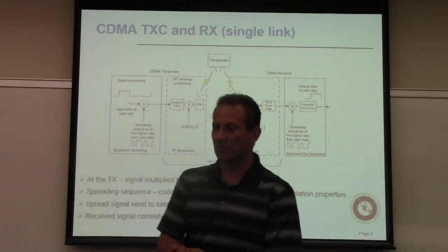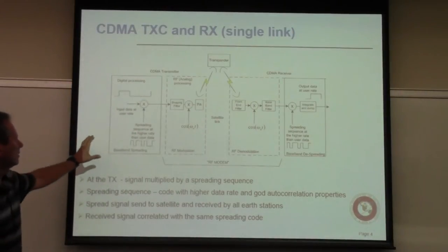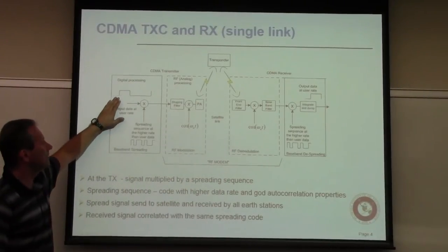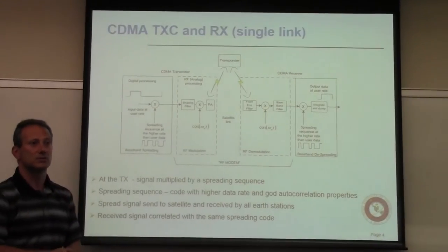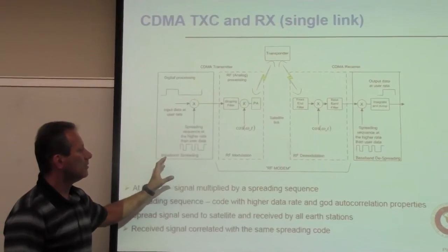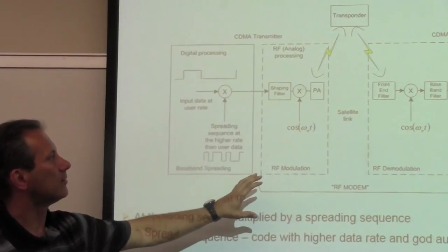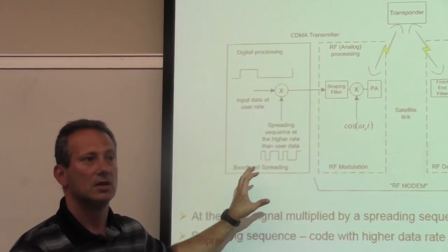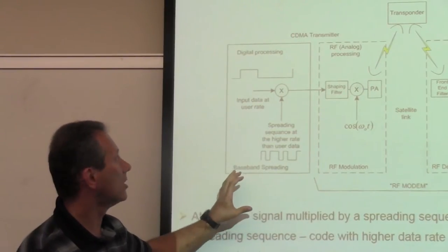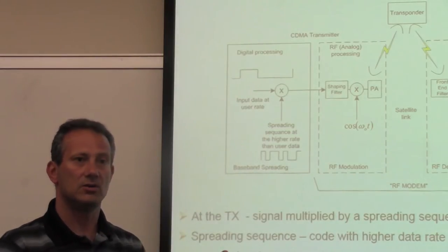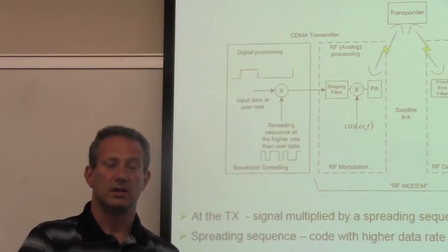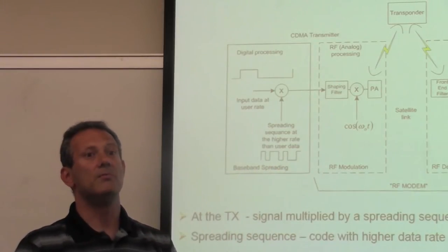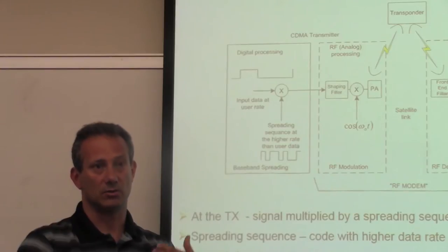This is looking at a transmission from one station to another. Here are the bits — the information I'm trying to send to the other end. In CDMA, before the data are sent to the RF piece of the transmitter, the data are spread — they are multiplied by another binary sequence that has a rate much larger than the rate of your information. For example, let's say you're signaling at one kilobit per second and your spreading sequence is going to be one megabit per second — a thousand times larger.